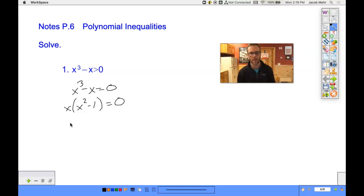And when I do that, I notice I end up with a difference of perfect squares. And we end up with this. We have zeros of zero, negative one, or one.